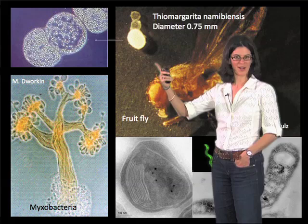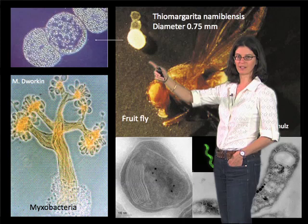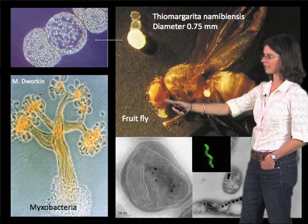Microorganisms can get remarkably large — they're not just on the scale of microns. Here's a good example: this is, to my knowledge, one of the largest microbial cells known to date. It's called Thiomargarita namibiensis, which means the sulfur pearl of Namibia, and it is on the same scale as the eye of a fruit fly.